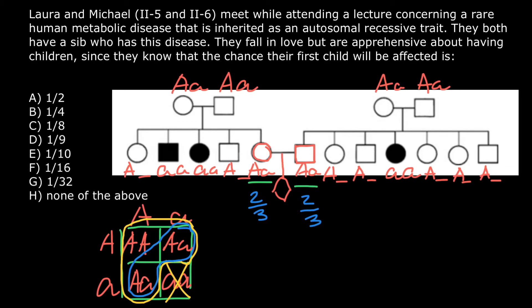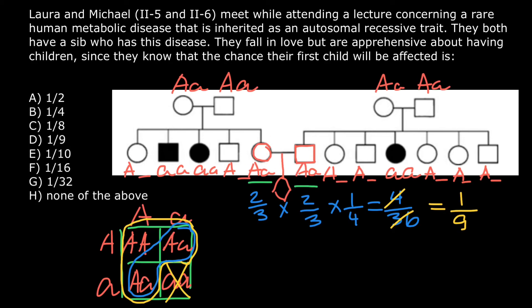If they are both heterozygous, the probability of having an affected child is one quarter. We multiply all these independent probabilities: 2/3 × 2/3 × 1/4. That gives us 4 over 36, which we reduce by 4 to get 1/9. So the probability that Michael and Laura would have an affected child is one ninth — approximately 11%. This is answer D.